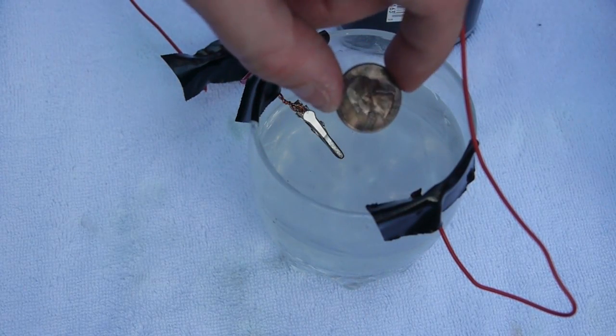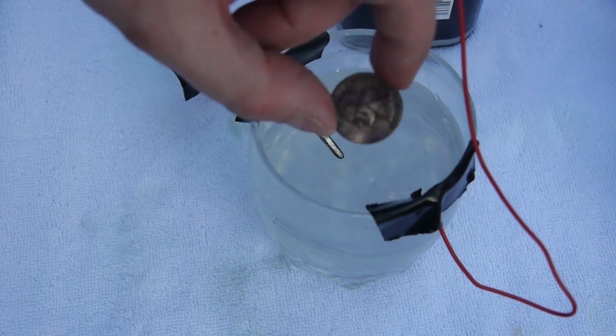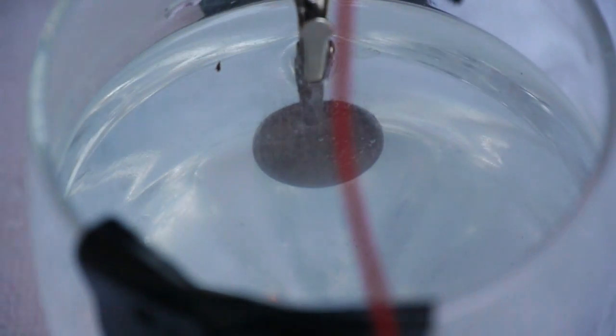After about 6 minutes, the quarter's developed a nice copper sheen to it. Now, if you keep your coin in too long, what's going to happen is that there's not going to be enough copper dissolved in the solution and it'll end up becoming black. Check this out.